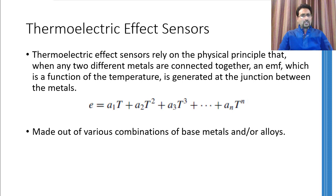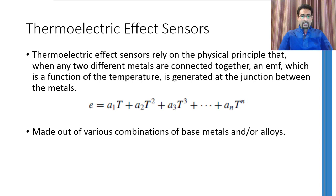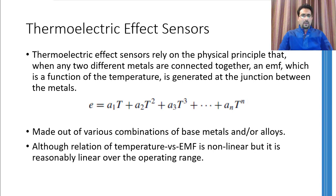The idea is to measure the voltage being generated at the junction and then insert this voltage into the equation to figure out the temperature. Don't worry that you have to solve this equation every time — for different pairs of metals or alloys, thermocouple tables are provided which are in fact the solution of this equation. One thing to mention is that this equation is quite non-linear, but if the temperature change is very small, it can be reasonably approximated to a linear equation.